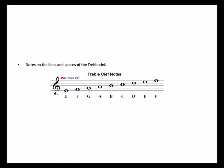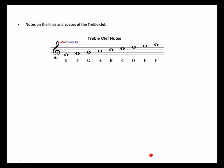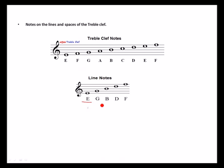The lines of the treble clef are: E on the first line, G on the second line, B on the third line, D on the fourth line, and F on the fifth line. We use the phrase 'Every Good Boy Does Fine' — E for Every, G for Good, B for Boy, D for Does, F for Fine.